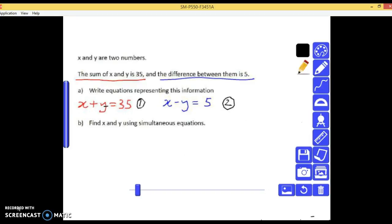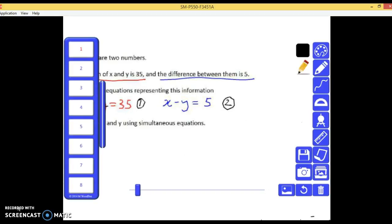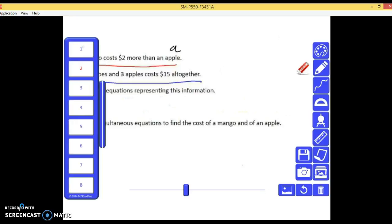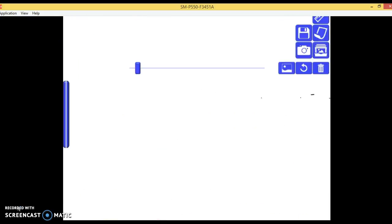We've got the sum of x and y type question here, and then we've got the mangoes and apples example as well. Okay, so these are the types of questions we're focusing on for the test. It could be one of this style of question. There are lots of styles of question for the applications of simultaneous equations, but these are our major focus.